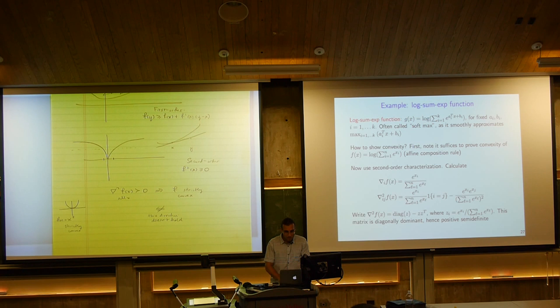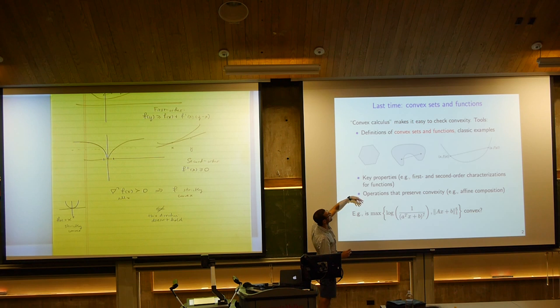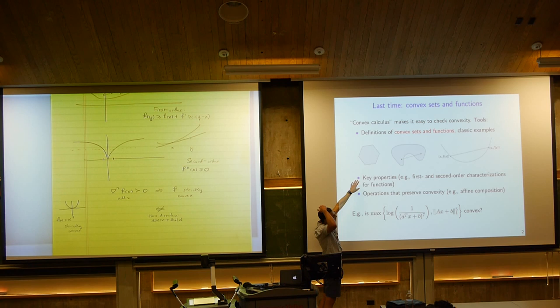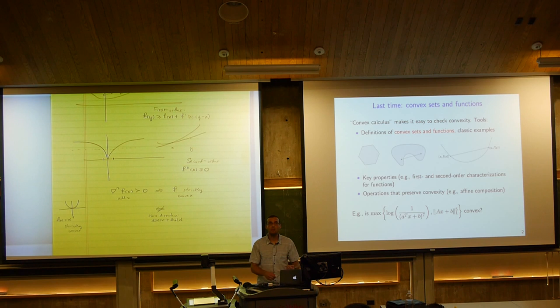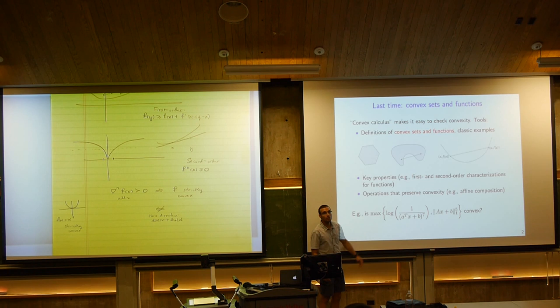This is a review of the last lecture: we defined convex sets and functions, gave examples, and provided key properties and operations that preserve convexity. From now on, if you're given a function and asked whether it's convex, you identify a few key atoms known to be convex, then use the rules that preserve convexity. For example, is this function convex? It would be horrendous to check from the definition.